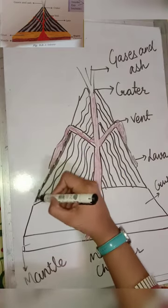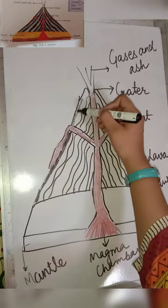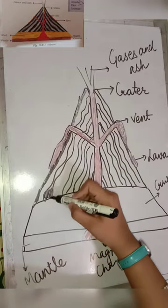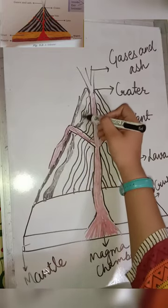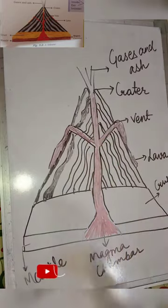The most deadly eruptions have occurred in Indonesia with thousands of lives lost to starvation, tsunamis as a result of eruption, ash flows, and mud flows.